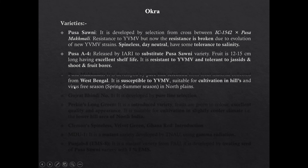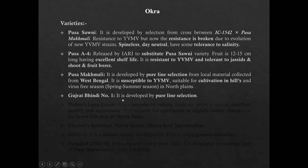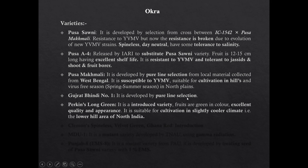Pusa Makmali: It is developed by pure line selection from local material collected from West Bengal. It is susceptible to YVMV and suitable for cultivation in hills and virus-free seasons in North Plains. Punjab Bhandi No. 1 is developed by pure line selection. Perkins Long Green is an introduced variety with green fruits of excellent quality and appearance, suitable for cultivation in slightly cooler climate in lower hills area of North India.